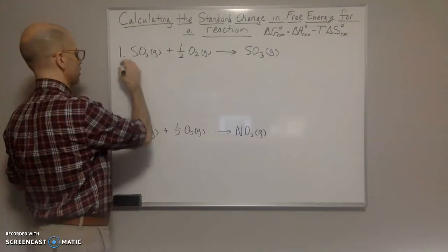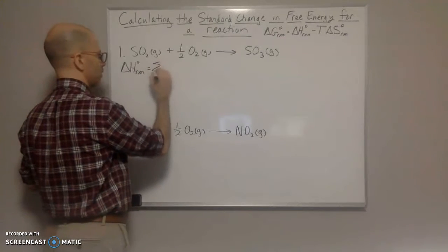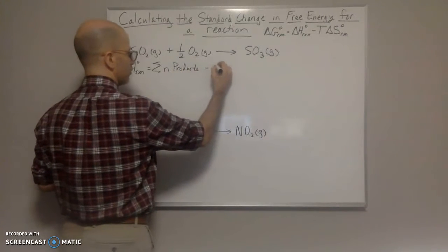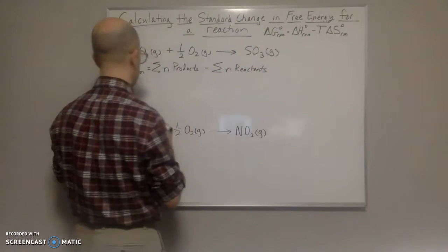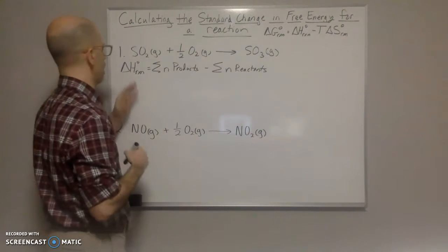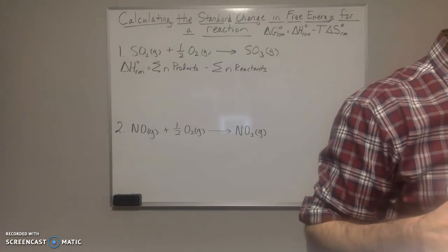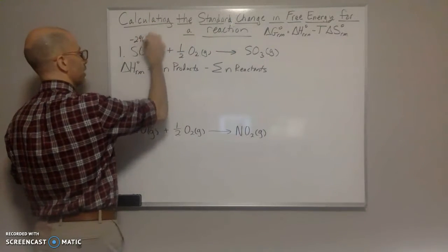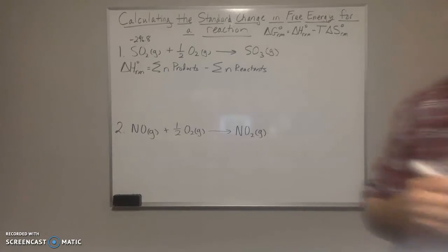For delta H, the standard enthalpy of the reaction is going to be the sum of the products minus the sum of the reactants. You need to look up the delta H's — the standard enthalpies for each of these. For SO₂, if we look it up, SO₂ is negative 296.8. Oxygen is zero, and SO₃ is negative 395.7.